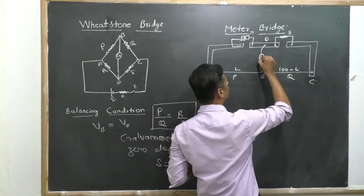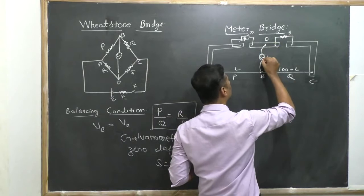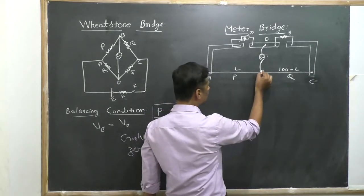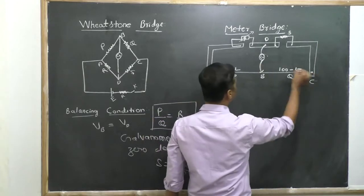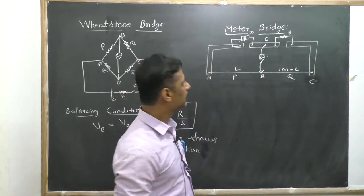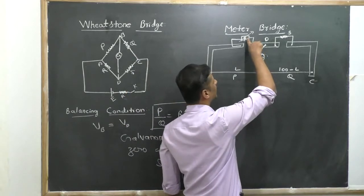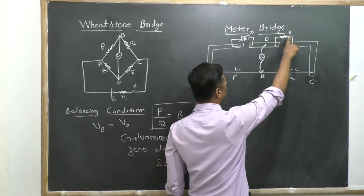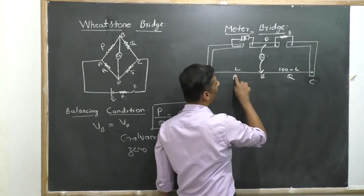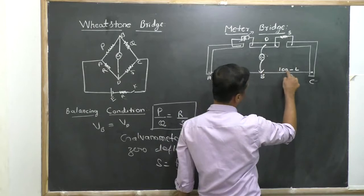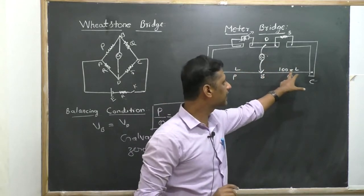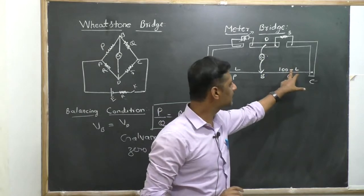Between points B and D, a galvanometer is connected, and the other end of the galvanometer is connected to a sliding contact or jockey. As the jockey moves from end A to end C, at one particular point the galvanometer deflection becomes zero — that is the balancing condition. There are four resistors: a variable resistor R, an unknown resistance S, resistance P corresponding to the balancing length L, and resistance Q corresponding to the remaining length 100 minus L.